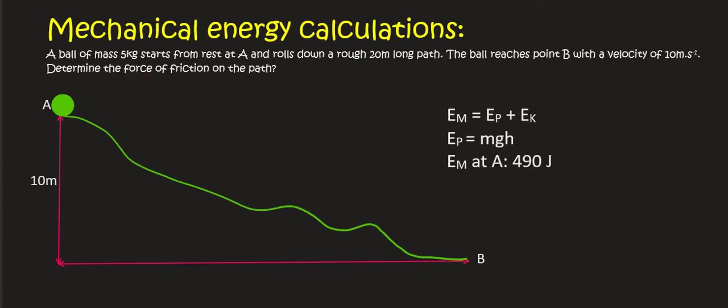Now if there was absolutely no friction and the object was simply falling due to gravity then it would also have 490 joules down here at the bottom. But let's see how much energy it actually has.